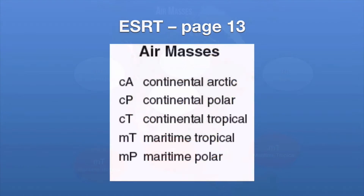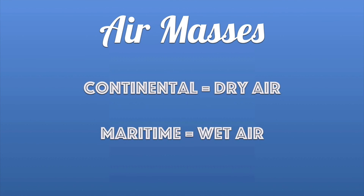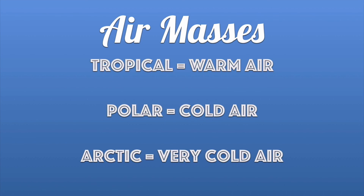In your reference table on page 13, there's a quick chart about air masses. It gives you their symbols as they appear on a weather map. You do need to know what the words mean: continental means dry air, maritime means wet air. On the temperature side, tropical means warm air, polar — like a polar bear — means cold air, and arctic — like the Antarctic — means very, very cold air.